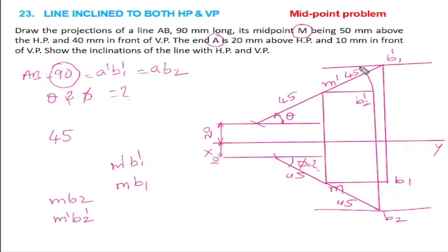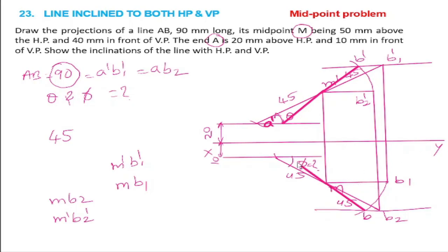Rotate M dash B2 dash to get our B dash. Rotate M-B1 to get our B. Draw M dash B dash and M-B as final lines. We already have the locus line for end A: 20mm above HP and 10mm in front of VP. Extend the front view M dash B dash line downward — where it touches the locus line, that point is our A dash. Similarly extend M-B in the top view to find point A.